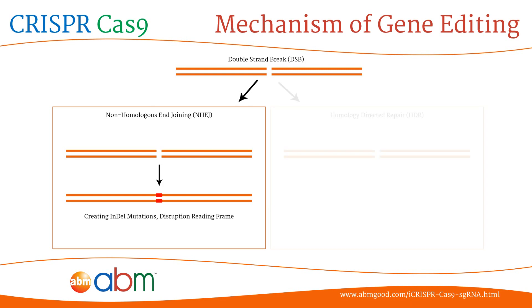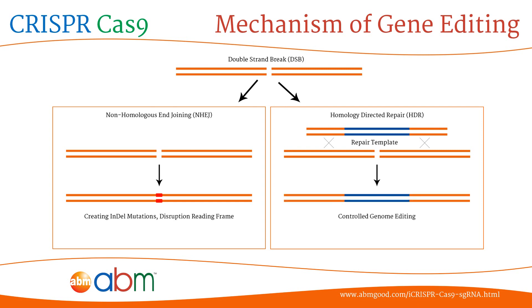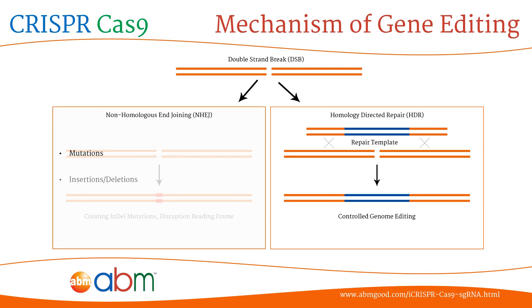Alternatively, the homology-directed repair pathway could be utilized in the presence of a repair template. This template will have homology to the flanking region of the double strand break. This method of repair is highly accurate and could be used to introduce specific nucleotide changes into the target gene. The non-homologous end-joining mechanism could be utilized to introduce random mutations, mostly in the form of insertions or deletions, and could be used to knock out the gene of interest.